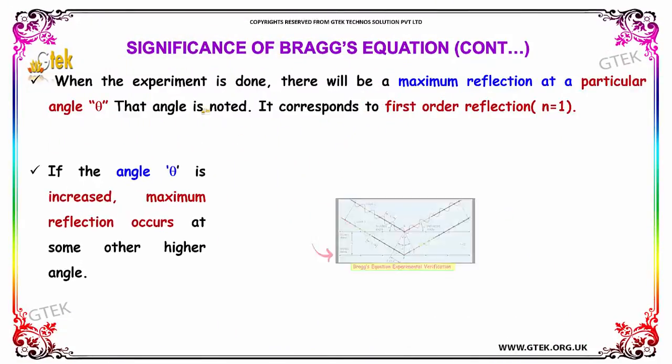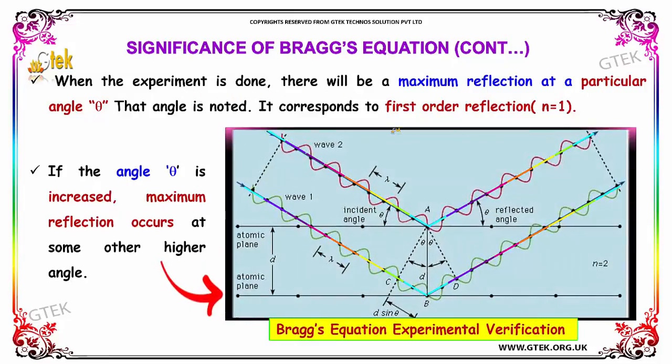When the experiment is done, there will be a maximum reflection at a particular angle theta that should be noted. This corresponds to the first-order reflection, N equals 1.